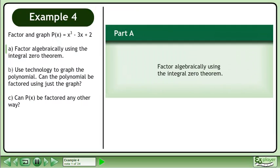Factor the polynomial p of x equals x cubed minus 3x plus 2. In part A, factor algebraically using the integral zero theorem.